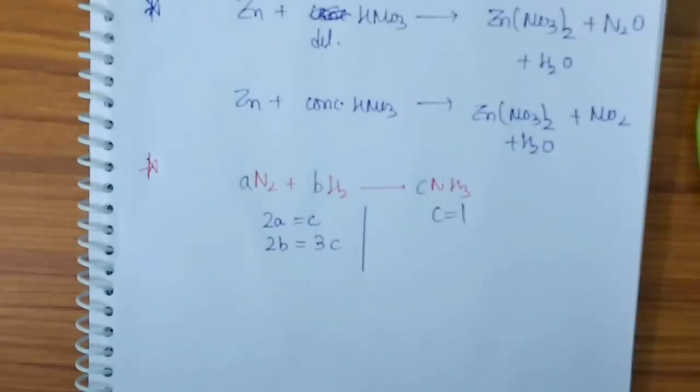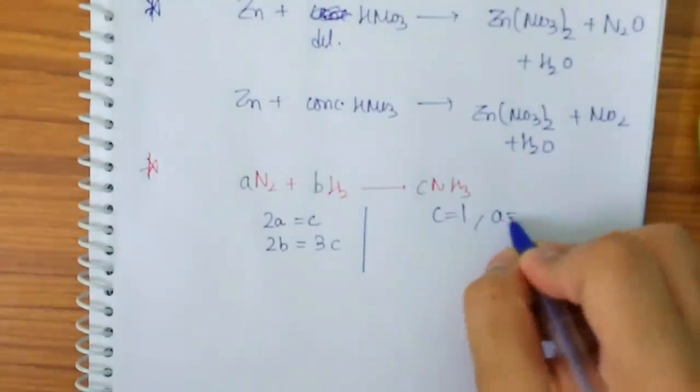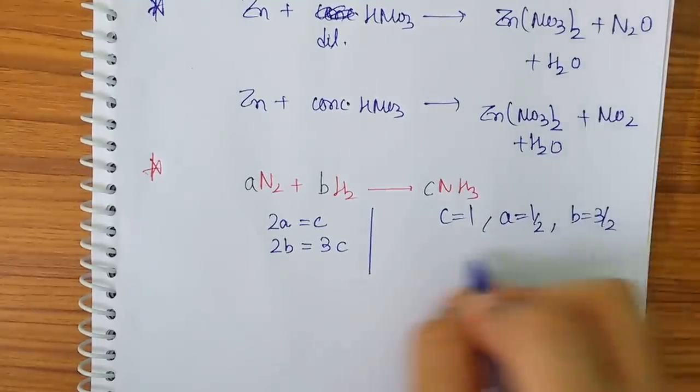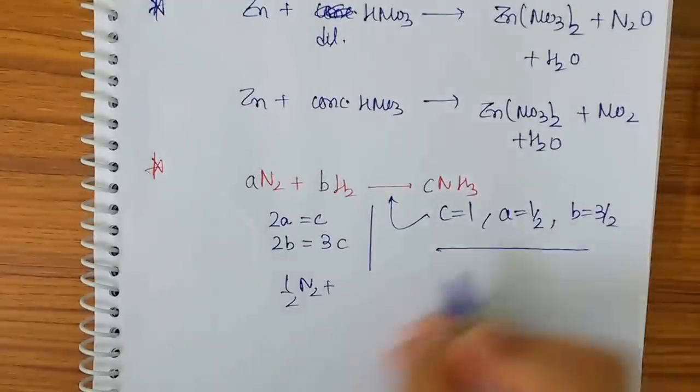It's our wish how to assume it. So let me assume C to be one. So A I will get as 1/2 and B I will get as 3/2 from the equations.